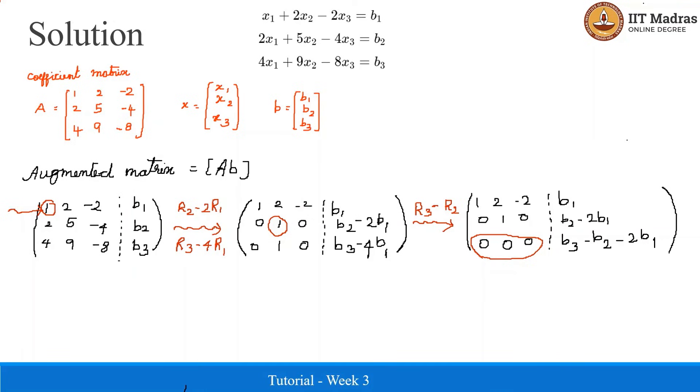By applying the row reduction for row 3, we have obtained the row echelon form of matrix A. In order to obtain the all 0 row, the condition is B3 minus B2 minus 2B1 must also be equal to 0. If it is equal to 0, then it implies B is in the column space of A. We have obtained the condition for Ax equal to B to be solvable.